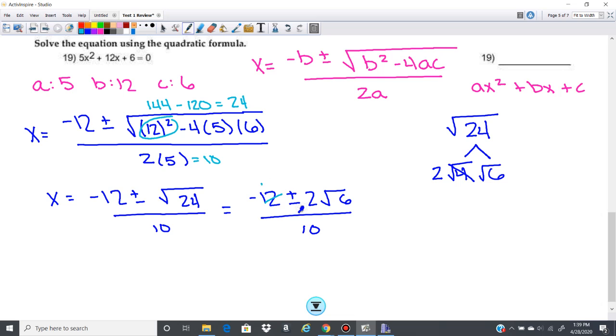12 divided by 2 is 6. 2 divided by 2 is 1. 10 divided by 2 is 5. And then if we put that into our form, there's going to be negative 6 plus or minus 1 radical 6. You do not need the 1, so just put radical 6 over 5.